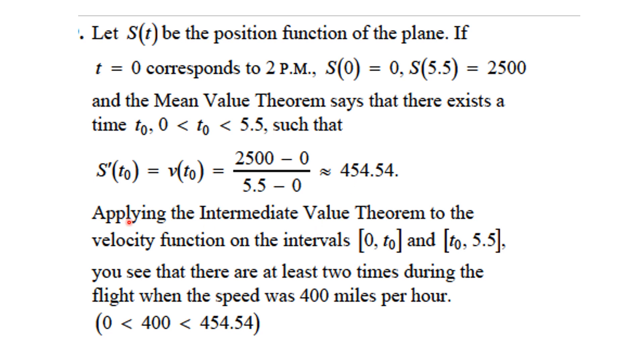Here we get to apply another one of our named theorems, the intermediate value theorem, because the velocity function is continuous on those intervals. You see there at least two times when the flight was going 400 miles per hour. Because what happened is it was when he was going faster, speeding up, and slowing down that he hit that. And so we've solved this problem.